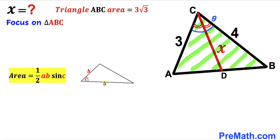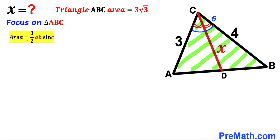In our case, the two side lengths are 3 and 4, and the angle between them is theta. Let's go ahead and fill in the blanks in this formula.